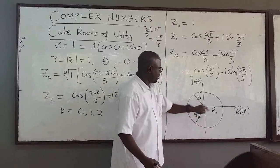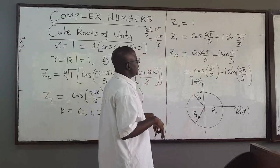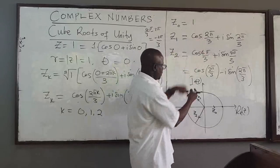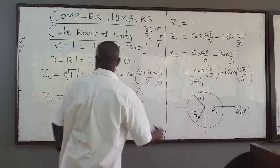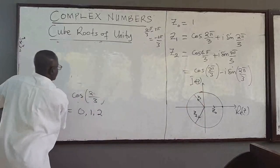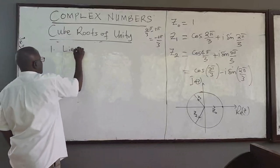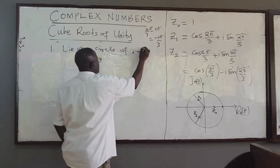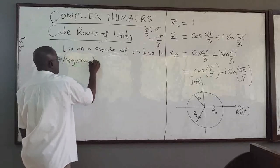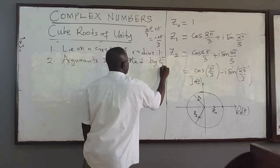The roots are equally spaced in terms of their arguments. The difference in the argument between consecutive roots is just two pi over three. So the three roots lie on the unit circle, separated by two pi over three.